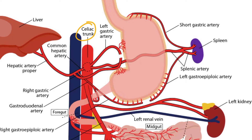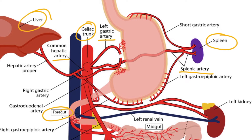The celiac trunk is labeled here. It has three main branches: the left gastric artery, the splenic artery, and the common hepatic artery. From these three branches, the celiac trunk supplies blood to the spleen, the foregut structures, and the liver.